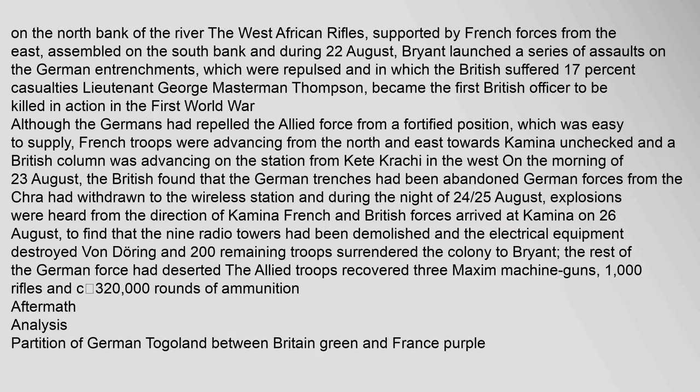On the north bank of the river, the West African Rifles, supported by French forces from the east, assembled on the south bank. During 22 August, Bryant launched a series of assaults on the German entrenchments, which were repulsed, and in which the British suffered 17% casualties. Lieutenant George Masterman Thompson became the first British officer to be killed in action in the First World War. Although the Germans had repelled the Allied force from a fortified position which was easy to supply, French troops were advancing from the north and east towards Kamina unchecked, and a British column was advancing on the station from Keat Cratchy in the west.